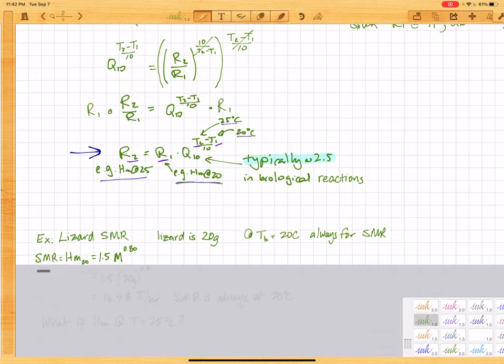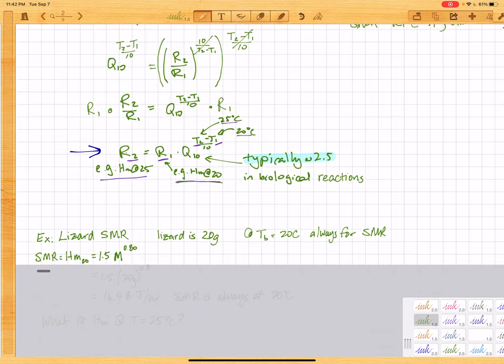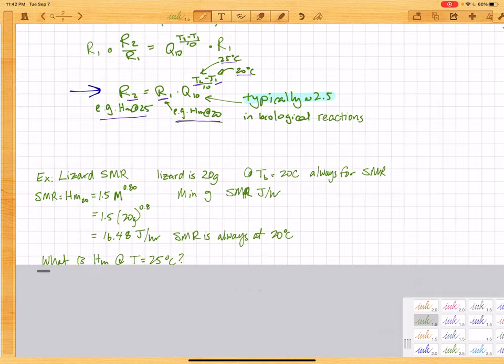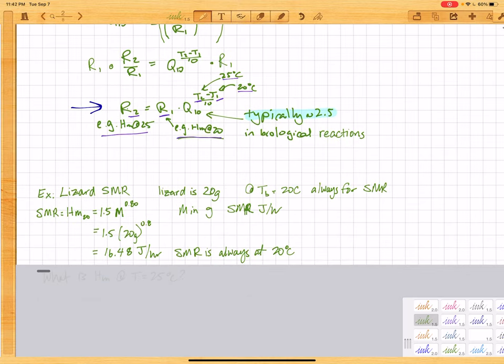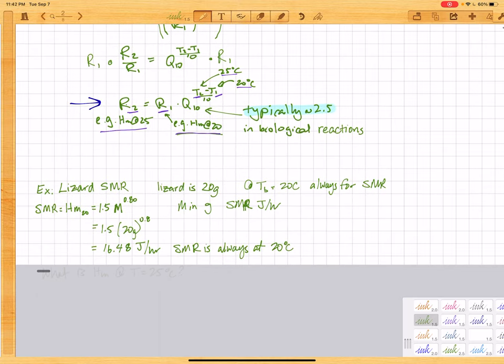And we have a whole bunch of scaling equations from Withers. And so the SMR for across all lizards is 1.5 m to the 0.8 power where mass is in grams and SMR is in joules per hour. So if we plug in the 20 grams, we get 16.48 joules per hour.